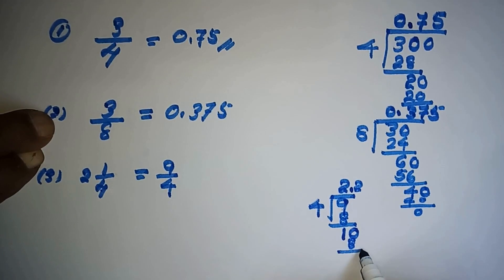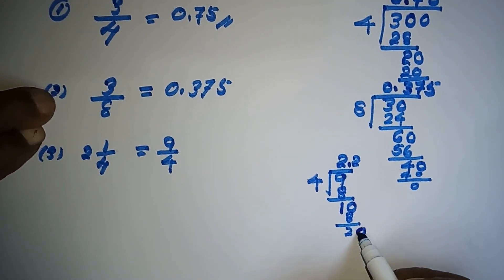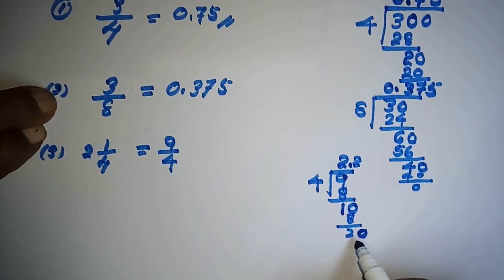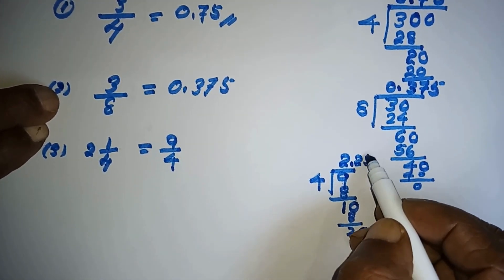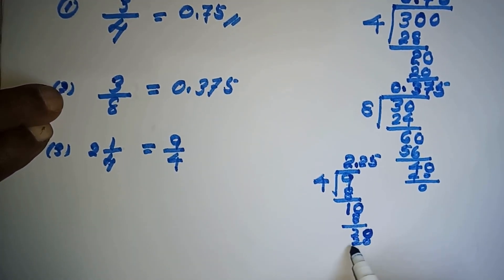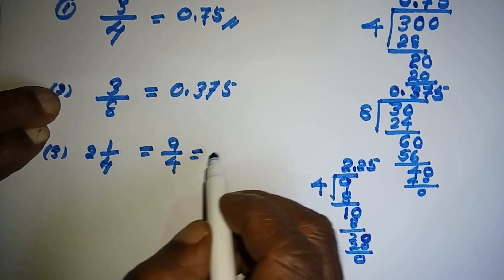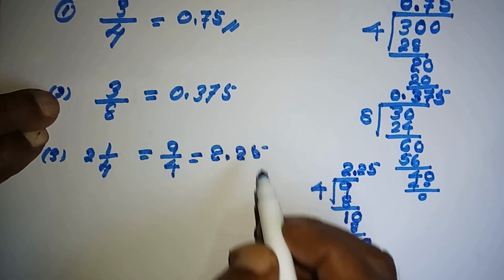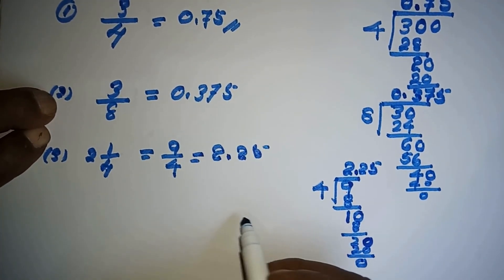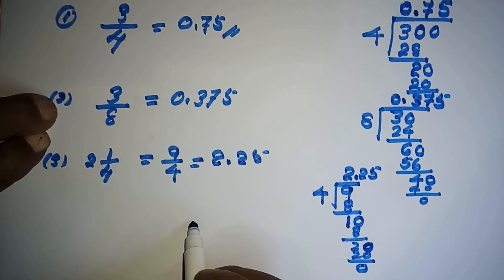Another 0 taken. Now for 20, how many 4's are there? It is 5. 4 times 5 is 20, now no balance here. So the answer will be 2.25. This is how you convert fractions to decimals.